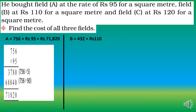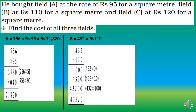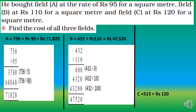Field B was bought at rupees 110 per square metre. Cost of Field B: 432 × 110. Using Bela's method: 432×0 = 0, 432×10 = 4320, and 432×100 = 43,200; adding gives rupees 47,520.